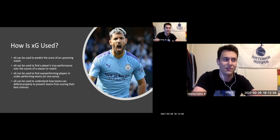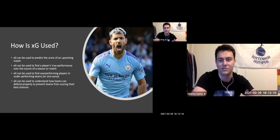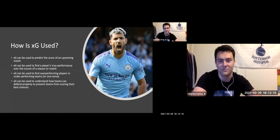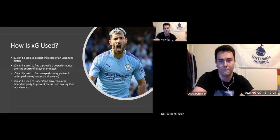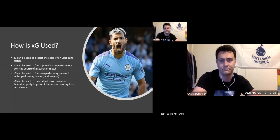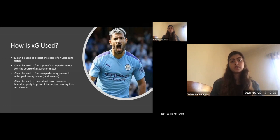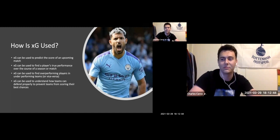A team like Tottenham, by contrast, plays much more counter-attacking, defensive soccer, so they only have a few shots on target and their expected goals figure is really low. You can track how well a team performs over the course of a season just by looking at their accumulated expected goals. That came up a lot in the discussion of Harry Kane as well, which we have a slide coming up on.